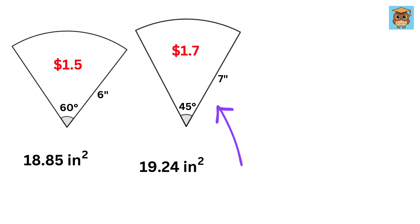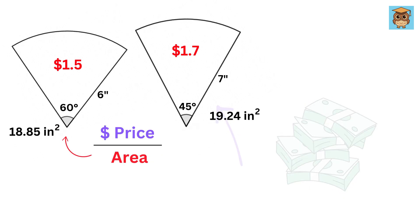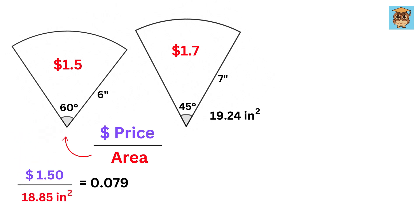So this slice has more area, right? But it is also a bit expensive. So now we will divide this price, which is $1.50, with this area to get $0.0796 per in².